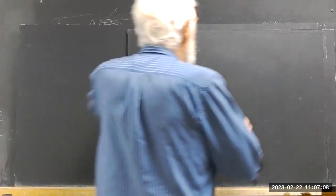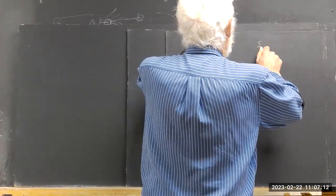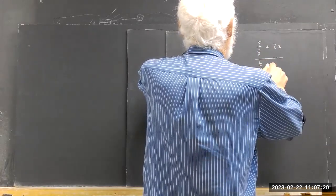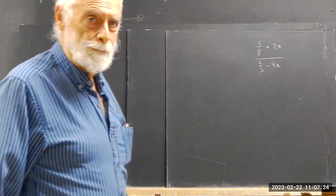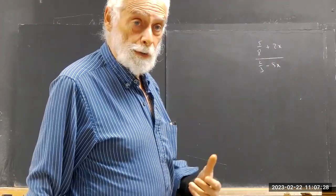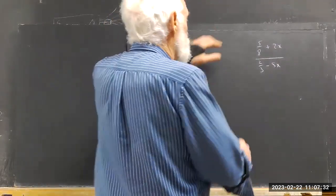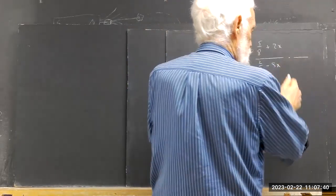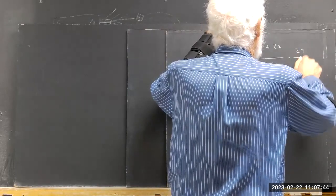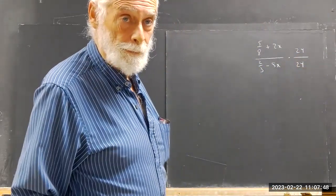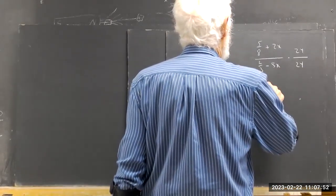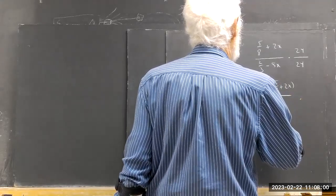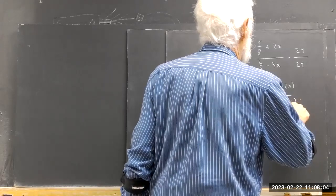We've got a question on a complex fraction. Let's say you got 5H plus 2X over two-thirds minus 5X. We know that we can multiply the numerator and denominator of a fraction by the same number. I'm going to choose the appropriate number here — I'm going to multiply by 24 over 24. This gives me 24 times (5H plus 2X) over 24 times (two-thirds minus 5X).